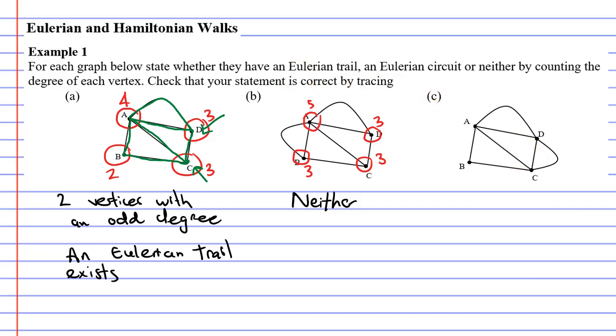Let's now move on to question C. Checking the degree of each vertex, we have one, two, three, four edges. One, two, three, four edges. Four edges here, and two edges. Notice that every vertex has an even degree, which means an Eulerian circuit must exist.